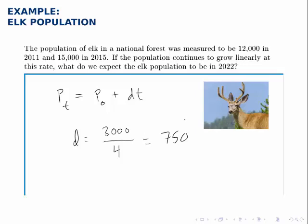In other words, the population grew on average by 750 each year since it grew 3,000 in 4 years. This is our full linear population model, using 2011 as year zero.